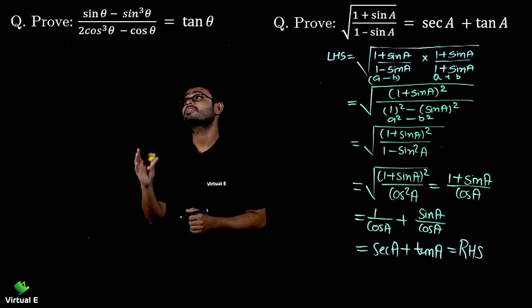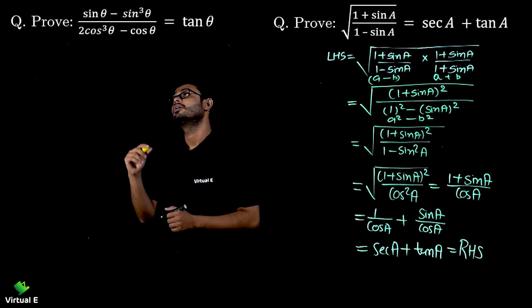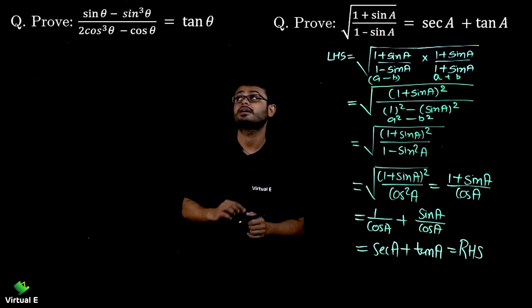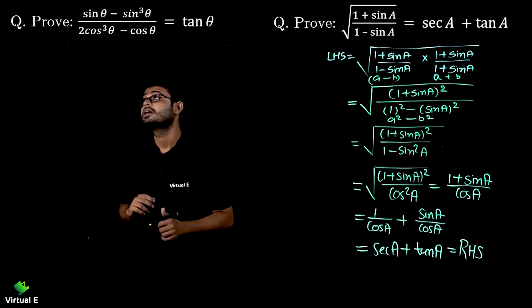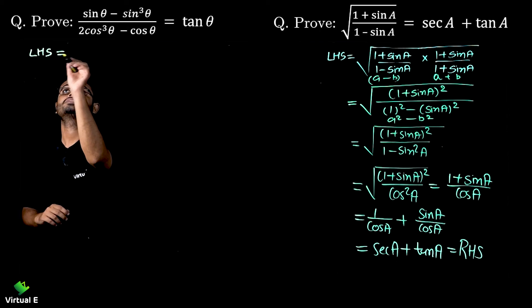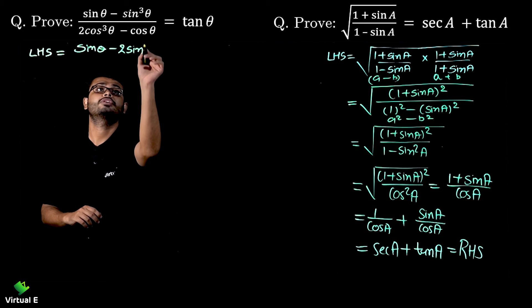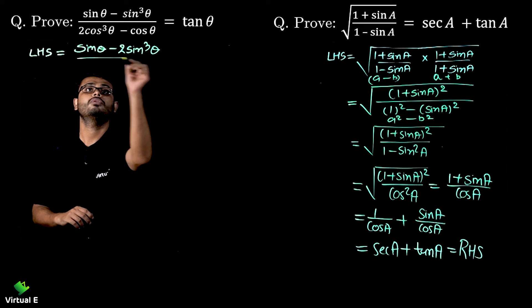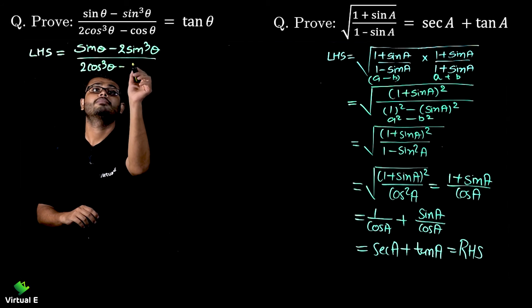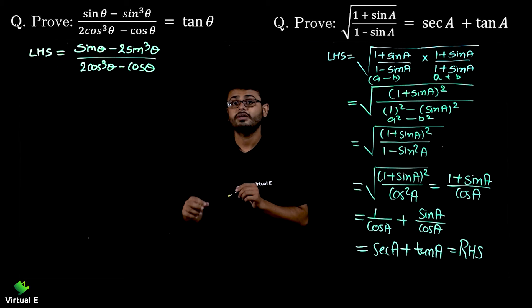Prove that (sinθ - 2sin³θ) / (2cos³θ - cosθ) = tanθ. Let's start with the LHS: LHS = (sinθ - 2sin³θ) / (2cos³θ - cosθ).